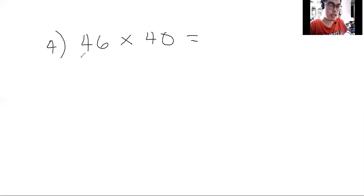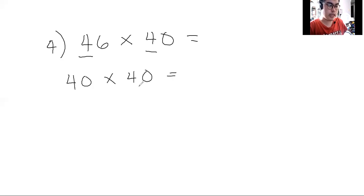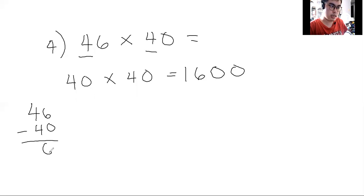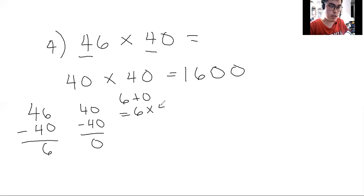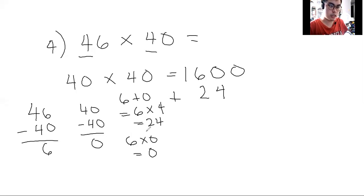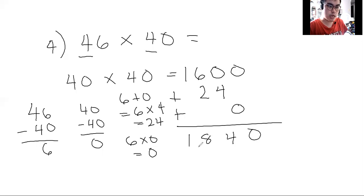What is the tens digit? It is 4. Since 4 is in the tens digit, we multiply 40 times 40 — 4 times 4 is equal to 16, then we add 2 zeros. Next, 46 minus 40 is 6, and 40 minus 40 is 0. So 6 plus 0 is 6, and we multiply by 4, which is 24 — we place it in the tens digit. Then 6 times 0 for the ones digit is 0. So our answer is 1,840.